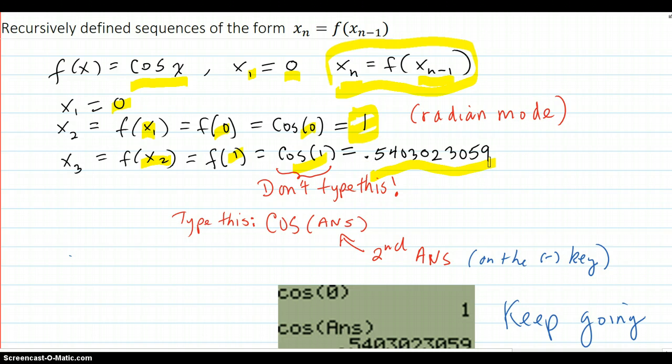These decimal numbers are rounded off and not the whole story. You don't need to type them because we have this calculator. Instead of typing cosine of the value 1, we type cosine of the answer. In other words, we put the previous answer back into the cosine.